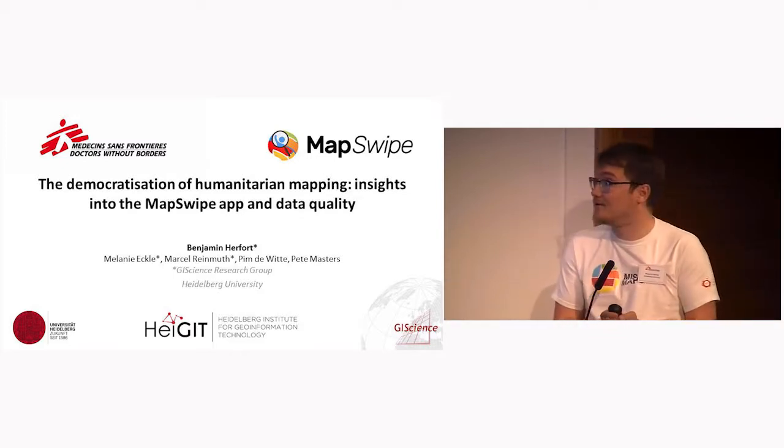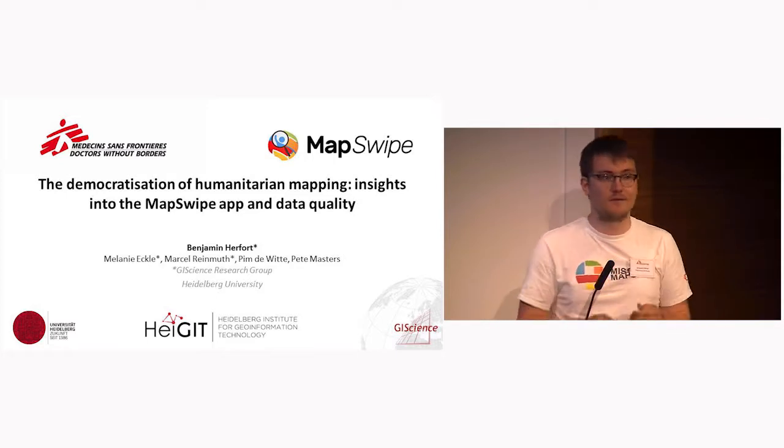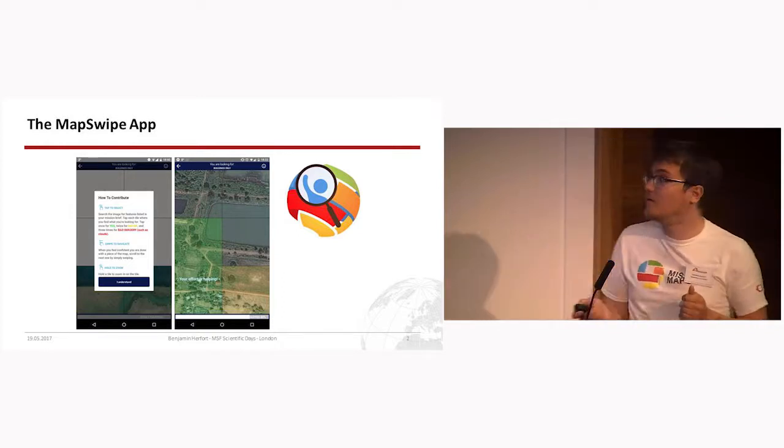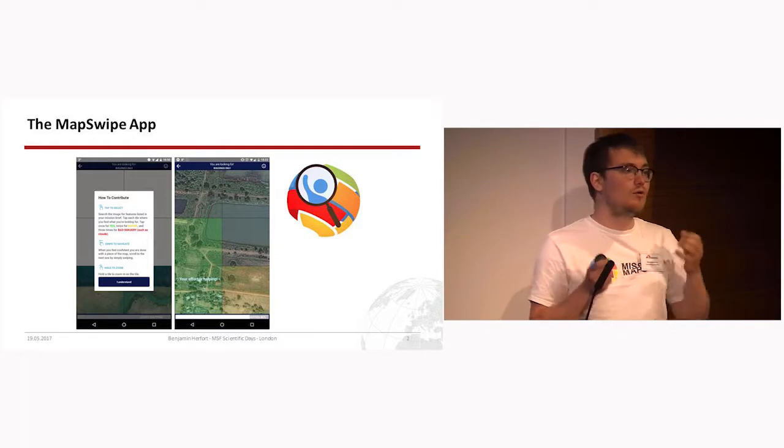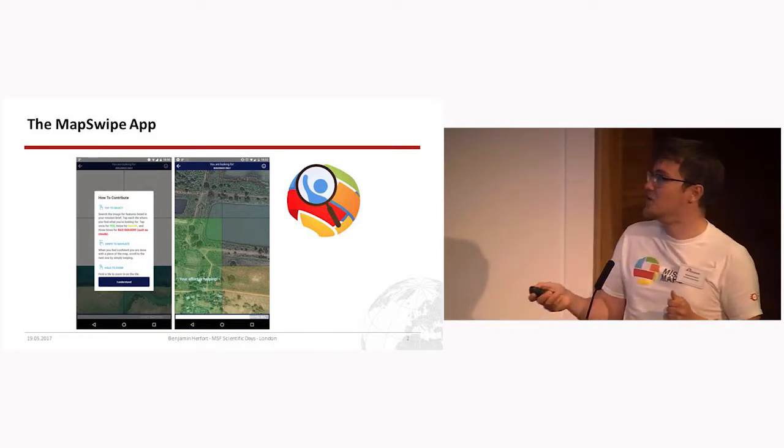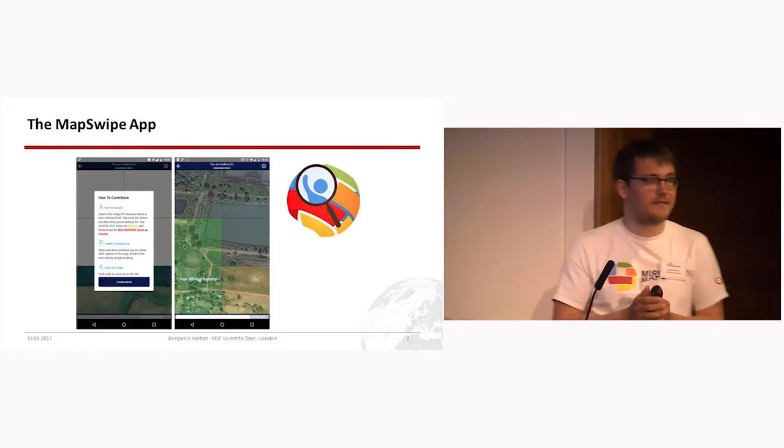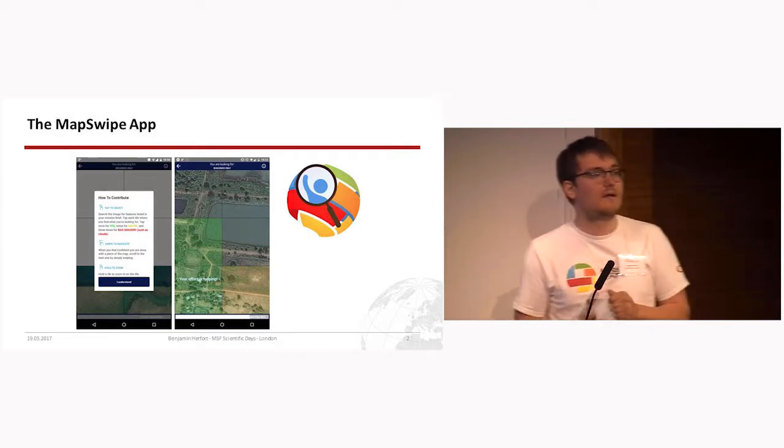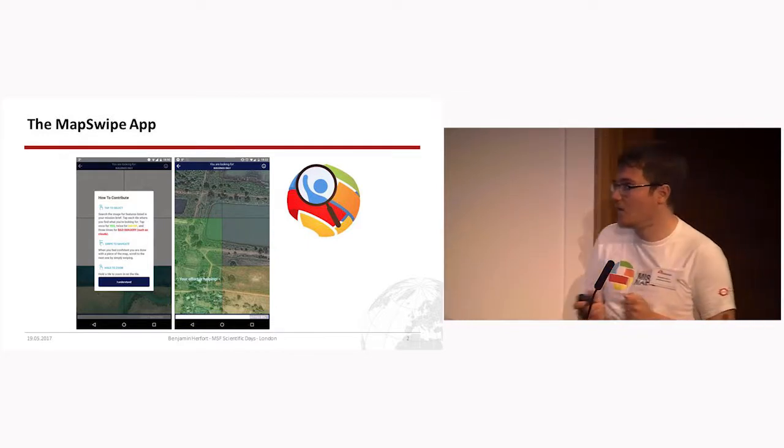What I want to present today is insights into the app and also into the data quality that's coming out of the app. Just for those of you who haven't seen it, MapSwipe is a mobile application designed to classify satellite imagery. The task we've been working on most is finding buildings on imagery like this. Every time you spot a building you just tap on your screen and indicate yes there's something so it turns green. If you tap twice you can indicate maybe I'm not sure, or tap three times for no imagery or clouds. So this is the app.